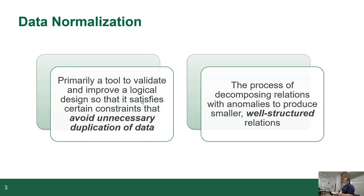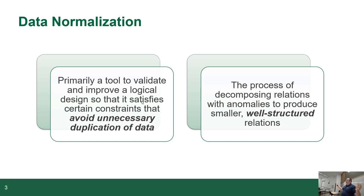To summarize in plain English: the goal of normalization is to make it so that whenever you need to make a change in the database, it happens in one place. That change is not going to duplicate data or make data go missing. And it should result in a bunch of smaller entities instead of one big fat entity.